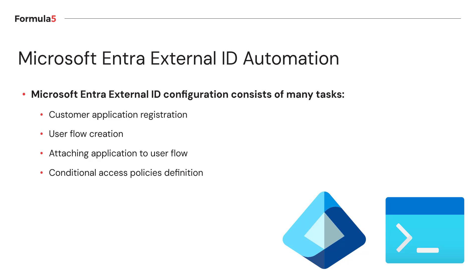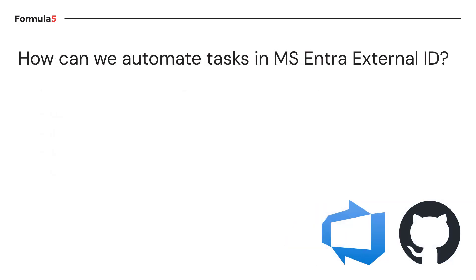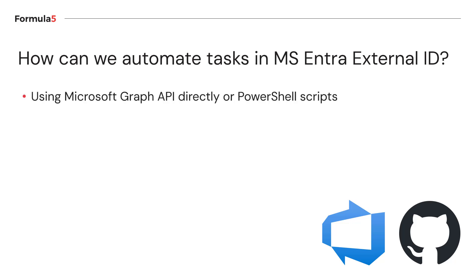All those tasks can be automated. We could go to the Entra Admin Center and manually click through configuration for customer app registration, create a new user flow, attach an application, and create a conditional access policy — but we also have the chance to automate those things. The preferred options are using Microsoft Graph API directly or PowerShell scripts. In this video, I'm going to show you how to use PowerShell scripts to automate tasks like application creation or creating a new conditional access policy.